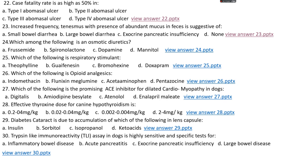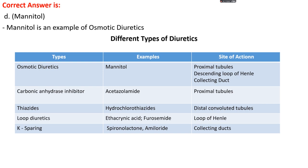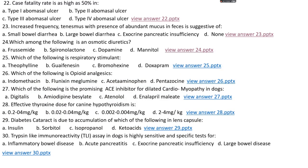Question number 24. Which among the following is an osmotic diuretic? Options A, furosemide; options B, spironolactone; option C, dopamine; options D, mannitol. The right answer is option D, mannitol. Types of diuretics: osmotic diuretics — mannitol, site of action is proximal tubules and descending loop of Henle and collecting duct; carbonic anhydrase inhibitors — acetazolamide, site of action is proximal tubules; thiazides — hydrochlorothiazide, site of action is distal convoluted tubules; loop diuretics — furosemide and ethacrynic acid, site of action is loop of Henle; potassium-sparing diuretics — spironolactone and amiloride, site of action is collecting duct.